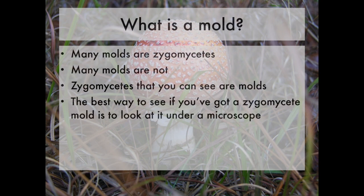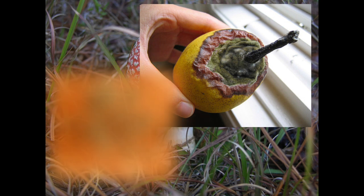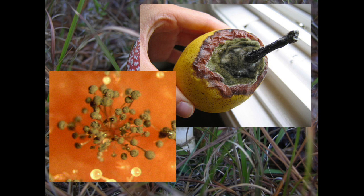Zygomycetes that you can see macroscopically without magnification are in fact molds. The best way to confirm what you've got is a zygomycete mold is to look at it with magnification, particularly with a microscope. Maybe you've encountered a scene like this — finding a moldy fruit or vegetable in your refrigerator. If you look at that green fuzz and you're a big biological nerd like me, you might take some of that green fuzz and look at it under the microscope and see it's actually made up of smaller spore-producing structures. When you see that, it's best just to get rid of the moldy item, because the green fuzz isn't the entire extent of the fungus — it's just the spore-producing part. The mycelium is probably well enmeshed in whatever that food item is.